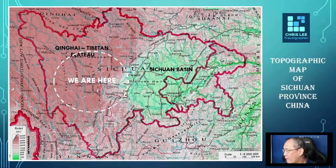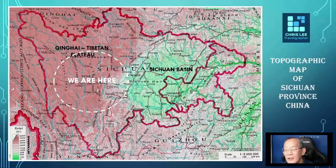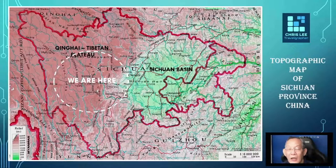Looking at the topography maps of Sichuan, the province covers most of the Sichuan Basin, shown in green, which is one of the lowest spots. But on the west of Sichuan, the brownish-red colour indicates altitudes of a minimum 3,000 metres and above. This is also commonly known as the Qinghai-Tibet Plateau.